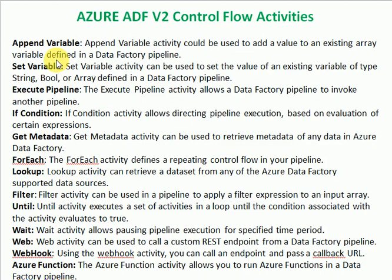Another activity is execute pipeline. This is required if you want to call any existing pipeline from another pipeline — that is, if you want to invoke one pipeline inside another pipeline, we can use the execute pipeline activity.